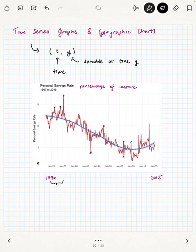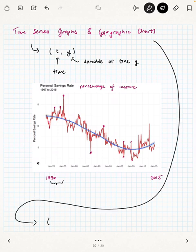As for geographic charts, we are now talking about graphs of the form (g, y), where g is a geographic location—it can be a city, county, or state. And y is our variable at that location.